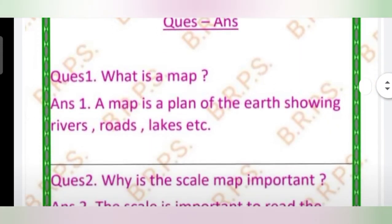Question number 1: What is a map? A map is a plan of the earth showing rivers, roads, lakes, etc. A map is a plan of the earth, which means that there are rivers, roads, lakes, etc.